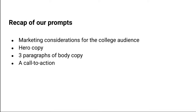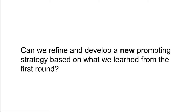To recap our prompts: we asked about marketing considerations for the college audience — both general and specific to an e-bike. We generated hero copy, three paragraphs of body copy, and a call to action. Strategies used: limiting the output to 30 words or less, specifying language and tone, using 'do that again' to leverage ChatGPT's memory, regenerating when results weren't great, and starting a new chat to reset context. Now we're jumping ahead to our second audience — retirees — with a new prompting strategy based on what we learned.